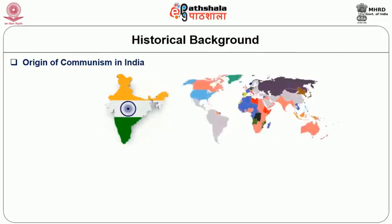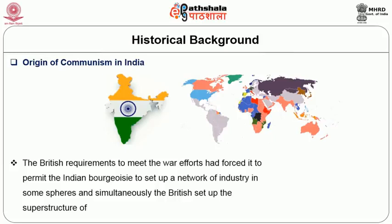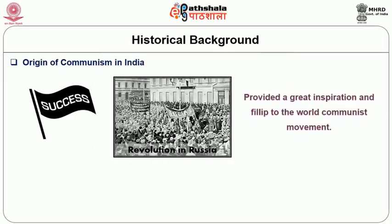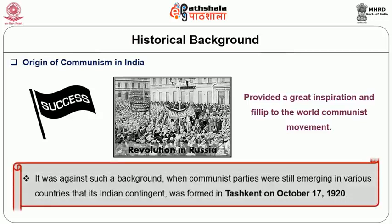Most of the colonial countries were populated predominantly by the peasantry and the working class was still coming into existence. India comparatively was advanced against other colonial countries. The British requirements to meet the war efforts had forced it to permit the Indian bourgeoisie to set up a network of industry in some spheres, and simultaneously the British set up the superstructure of railways, communications, etc. The success of the revolution in Russia provided great inspiration to the world communist movement. It was against such a background that its Indian contingent was formed in Tashkent on October 17, 1920.